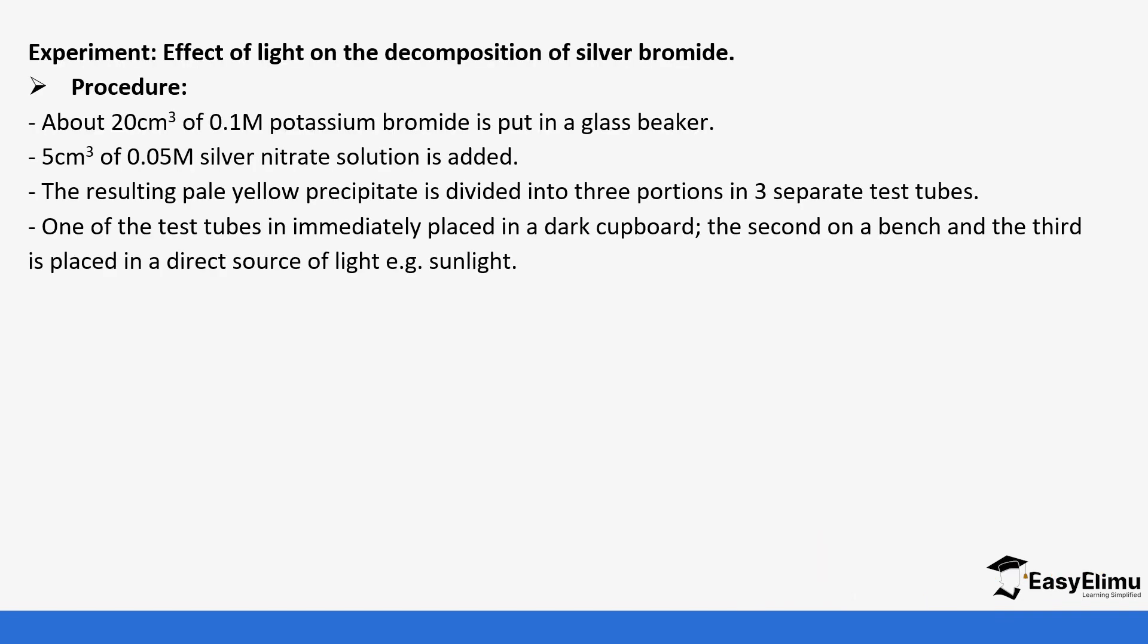When you look at the decomposition of silver bromide, we add 20 centimeters cubed of potassium bromide in a glass beaker and then we add 5 centimeters cubed of silver nitrate to the solution. The resulting pale yellow precipitate is divided into three portions in three separate test tubes. One test tube is immediately placed in a dark cardboard, the second one on the bench, and the other one is put directly next to a source of light, in sunlight.